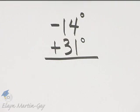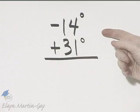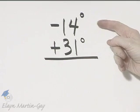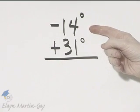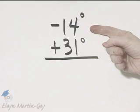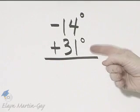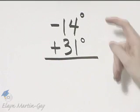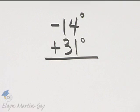Make sure you read and reread this problem. We're given that we had 14 degrees below zero, which we'll denote by negative 14 degrees. By noon it had risen 31 degrees, so to that temperature we will add 31 degrees.